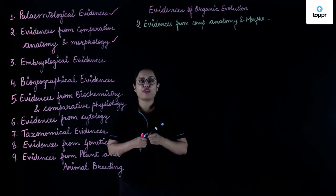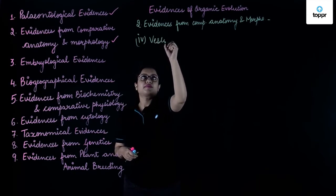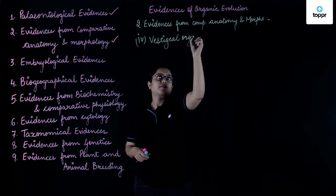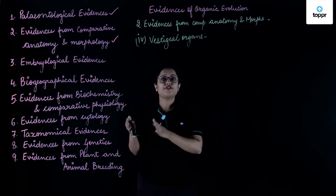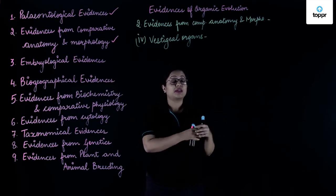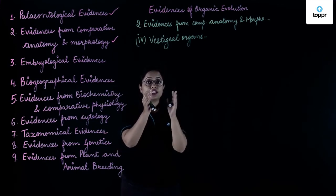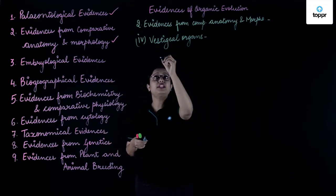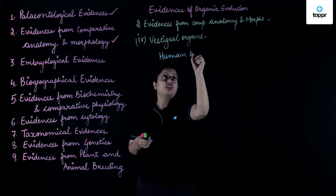The next evidence from comparative anatomy and morphology is of vestigial organs. These are the organs which are present in reduced form and are non-functional in our body, but the comparative organs are present in some other animals. It is believed that these organs were functional in our ancestors. Some vestigial organs are present in the human body.